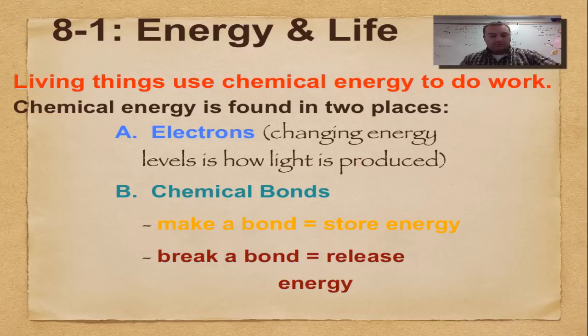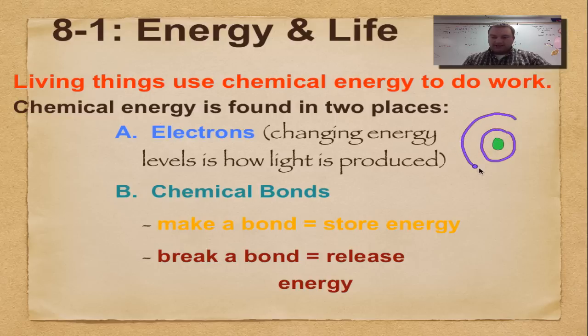Chemical energy is found in two places. Number one is electrons. If you remember what electrons are, they're the negative particles that are going around an atom. They are found in energy levels. So this is the nucleus, and here's the first energy level, and there's the second energy level. So this is a Bohr's model. This one's got two electrons, and we'll just say out here we got four. So this is a carbon atom.